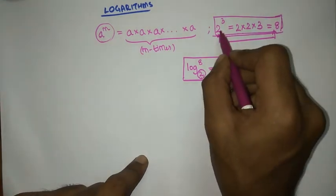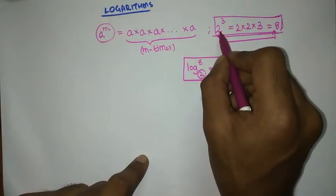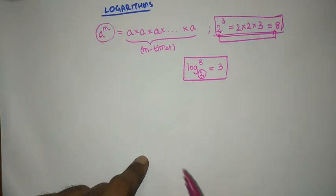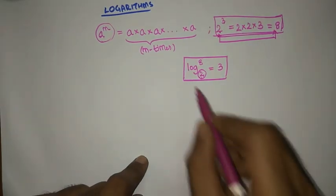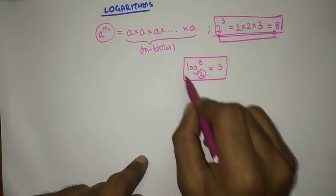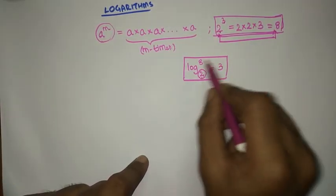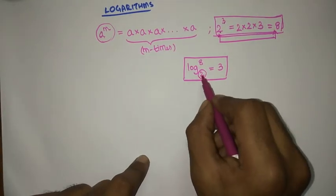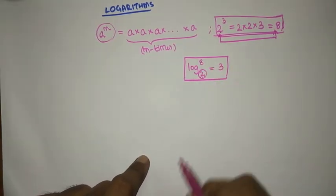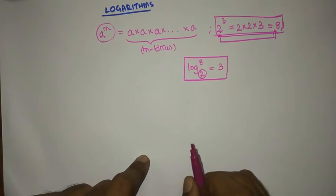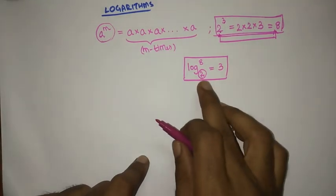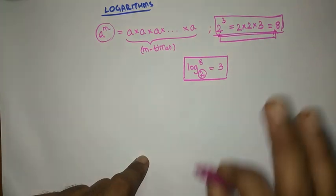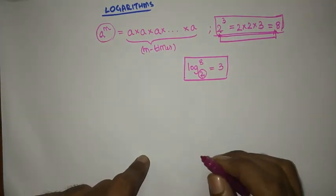Both the exponent form and the logarithmic form convey that you need to multiply 2, 3 times to get 8. The representation is different, but the meaning is the same.